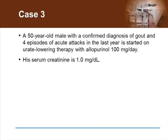Let's consider a different clinical scenario where a 50-year-old male with a confirmed diagnosis of gout and four episodes of acute attacks in the last year is started on urate-lowering therapy with allopurinol 100 milligrams a day, and his serum creatinine is 1 milligram per deciliter. What is the most appropriate therapy for prevention of recurrent acute attacks of gout? Options include: colchicine 0.6 milligrams twice a day, low-dose non-steroidal anti-inflammatory, low-dose oral corticosteroid, or continue allopurinol alone with escalation of the dose to achieve the target serum uric acid level.